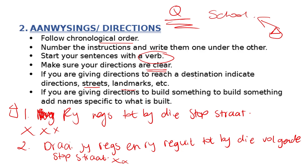Always give some sort of landmark so they know they're on the right path. Give them the stop street, give them the traffic light, tell them which side the destination will be on. When they get to your school it should be flawless. Always start with a verb, give landmarks, give street names if you can — for example, 'Draai regs en langs Long Street' — and you should be fine.